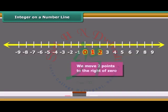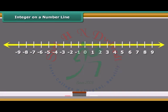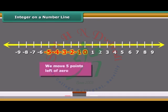Here to mark plus 2 on the number line, we move two points to the right of zero. Similarly, to represent minus 5, we move five points left of zero.